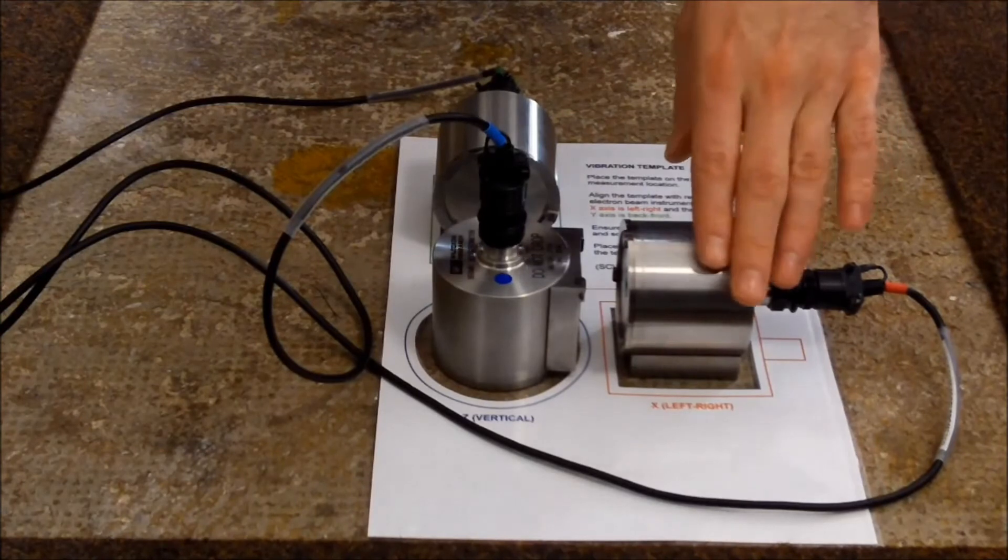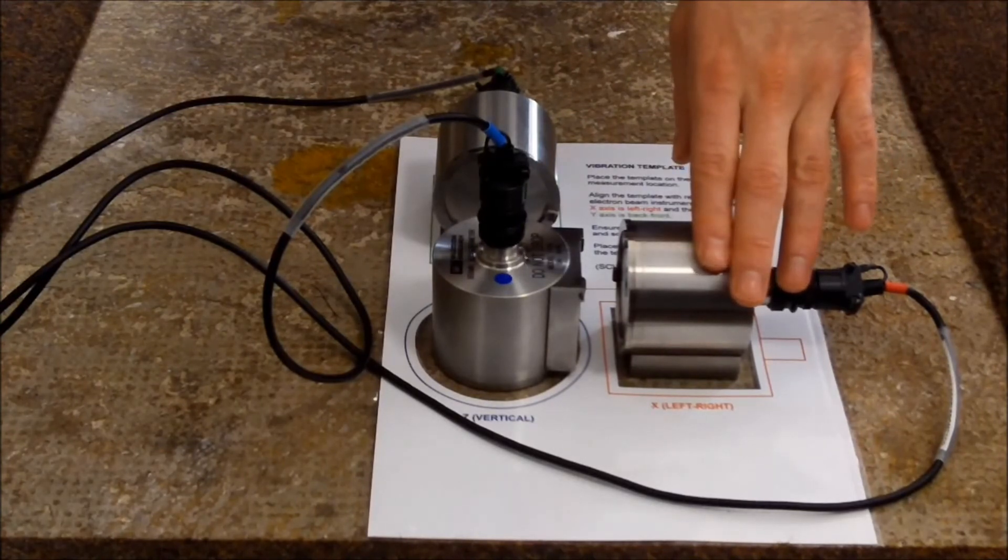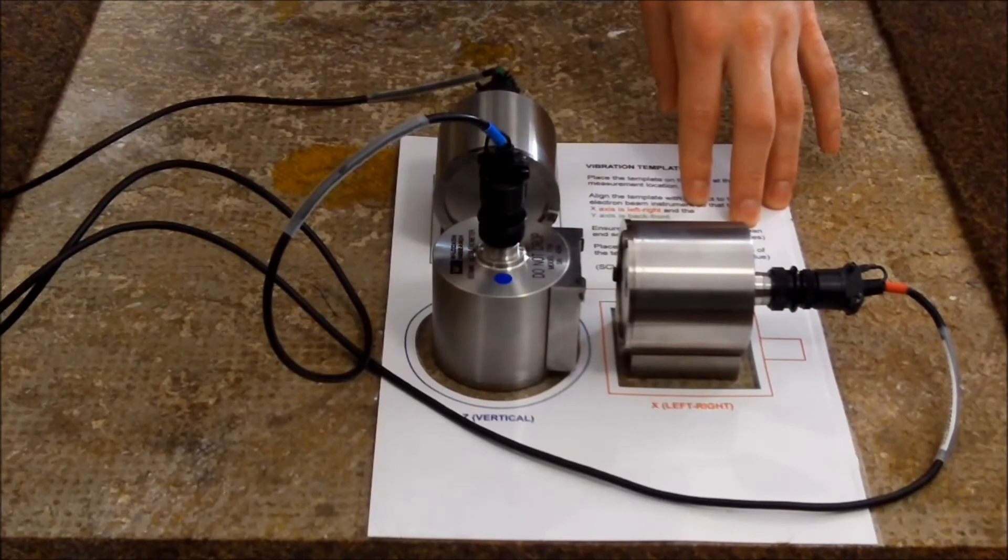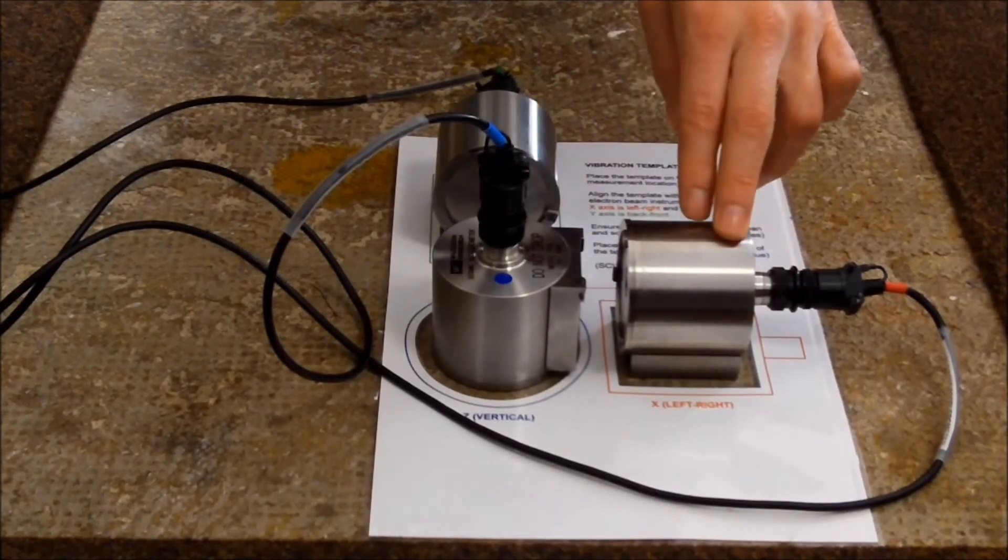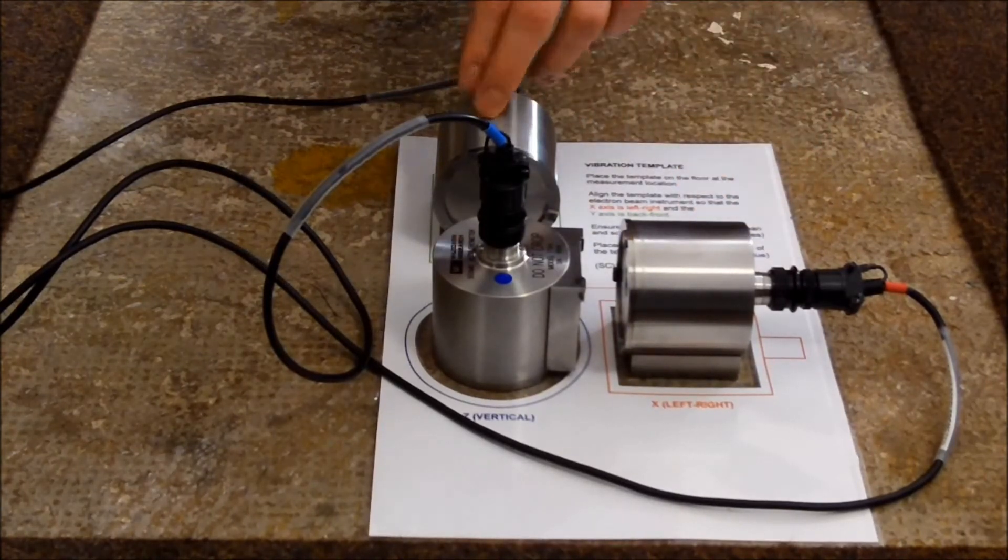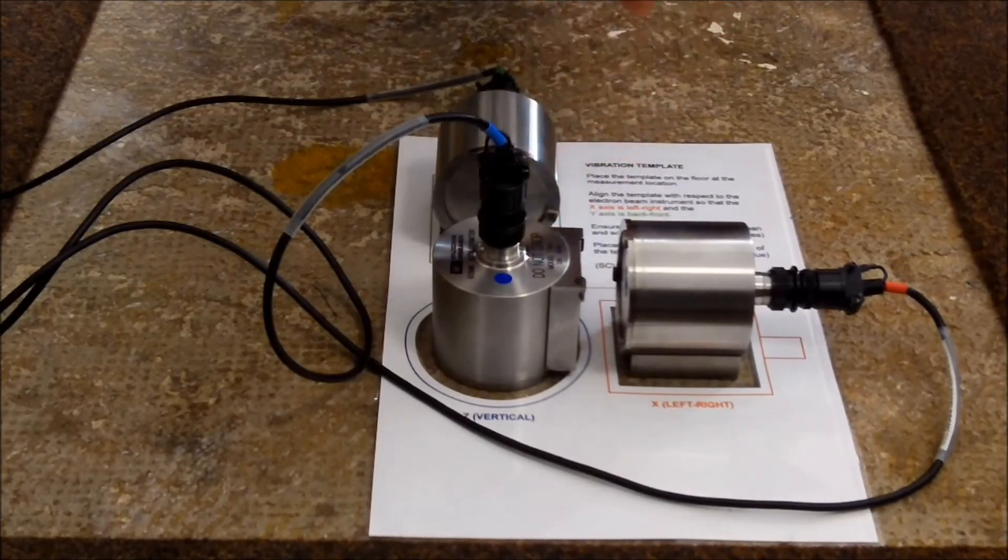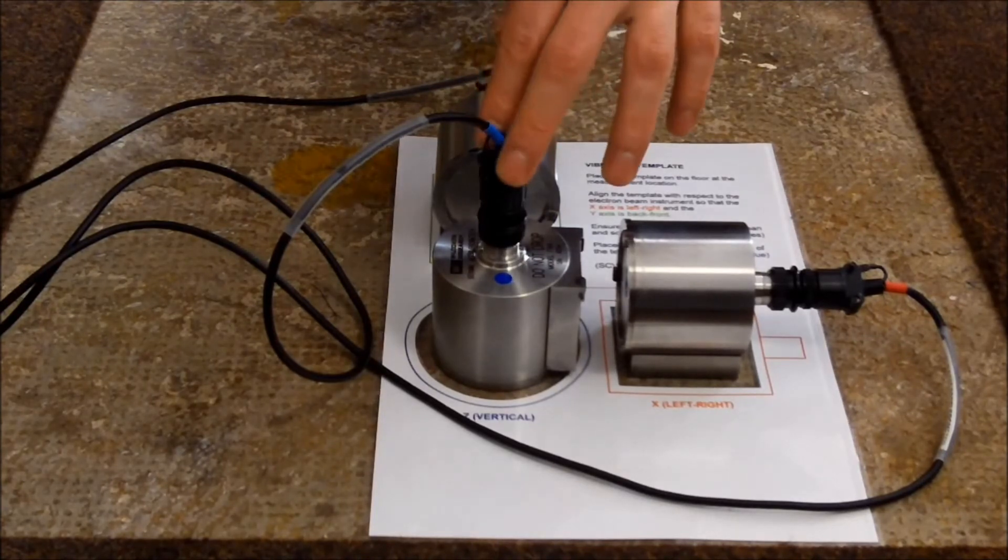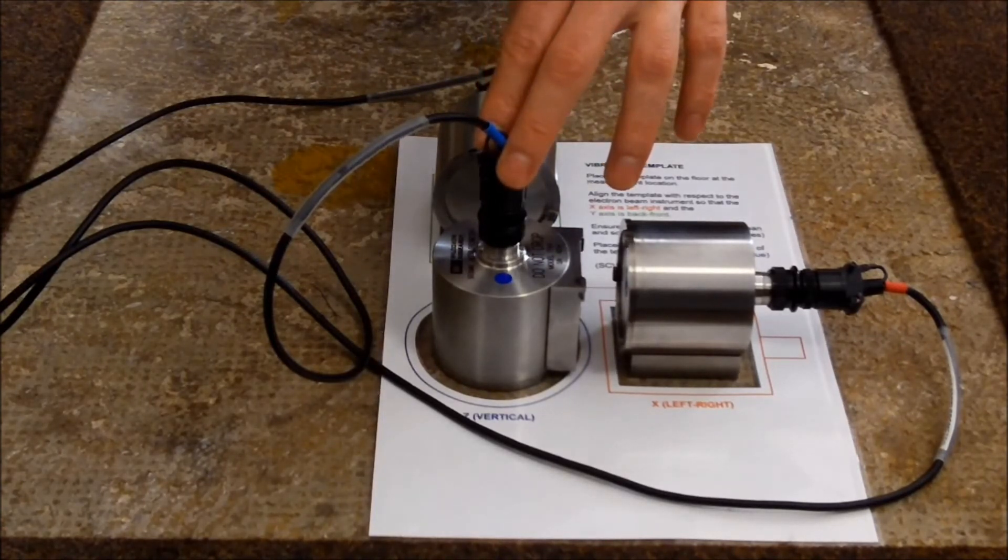First of all, put the accelerometers in their correct position. Align the vibration template with the axis of the instrument for which you are making the survey. X is left to right, Y is back to front, and Z is vertical. Use the template to align the sensors along the X, Y and Z axis. Match the color coding of the directions on the template to the sensor colors.